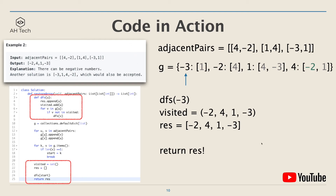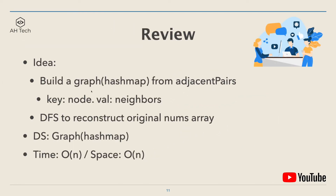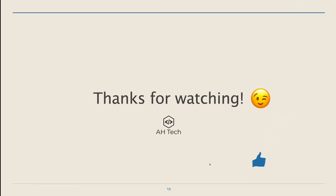This concludes the algorithm. To review: the main idea is to build a graph hash map from the adjacent pairs array. The key is a node in the array and the value is its left and right neighbors. Then we use DFS to reconstruct the original nums array from the graph. The main data structure is a graph, also implemented as a hash map. Time and space complexity of this approach are both linear. Thanks for watching — if you liked this video please give it a like and subscribe to my channel, and I'll see you in the next one.